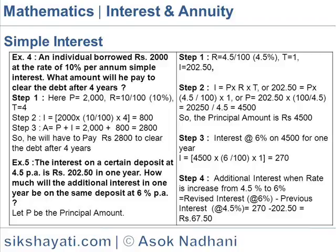Step 2: I = 2000 × (10/100) × 4 = 800. The amount he has to pay: A = P + I = 2000 + 800 = 2800. So he will have to pay Rs.2800 to clear the debt after 4 years.